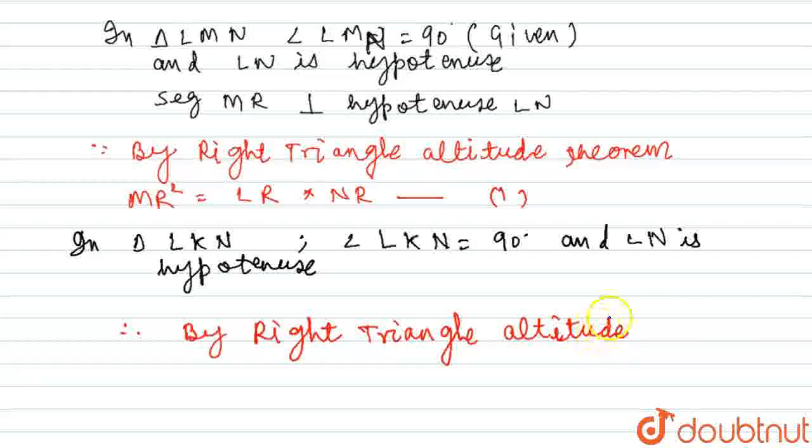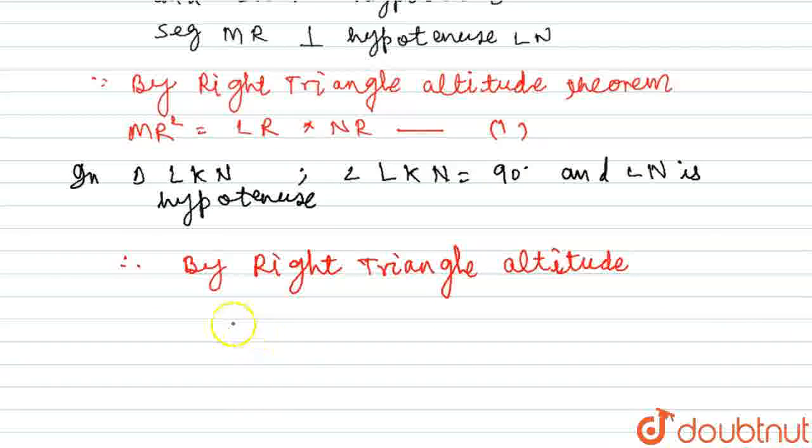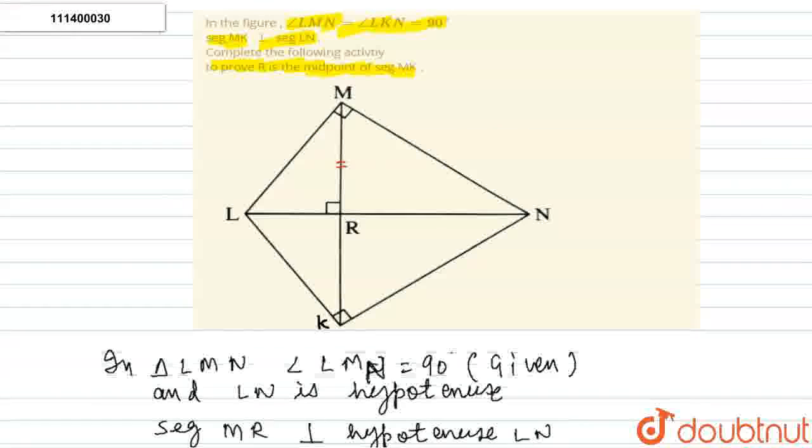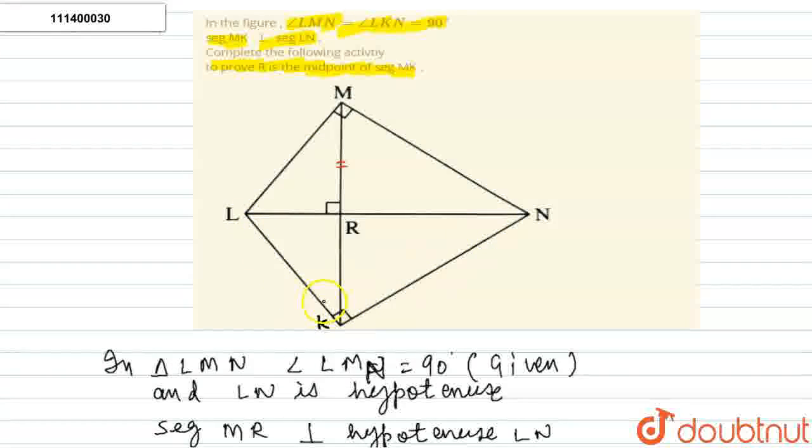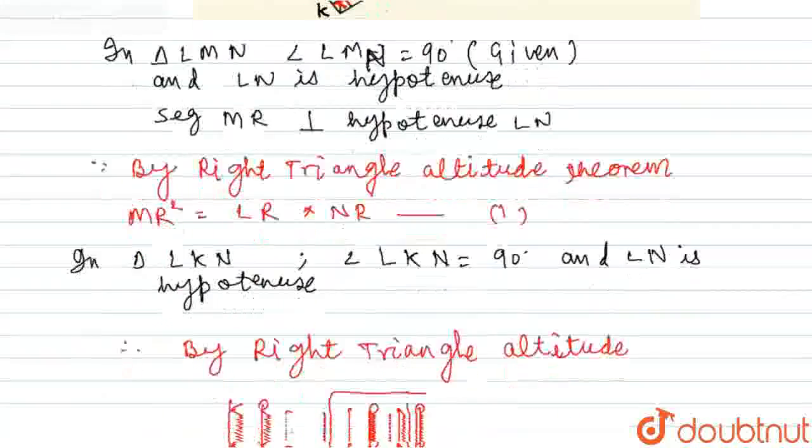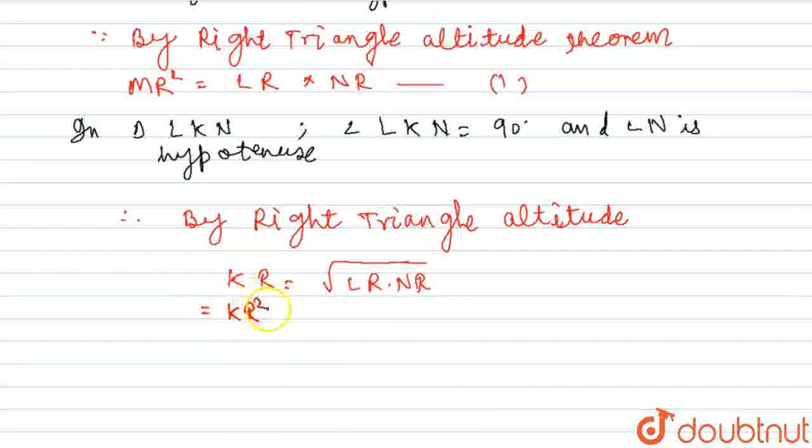The value will be KR equals to under root of LR into NR. KR square is equals to LR into NR. This is equation number one.